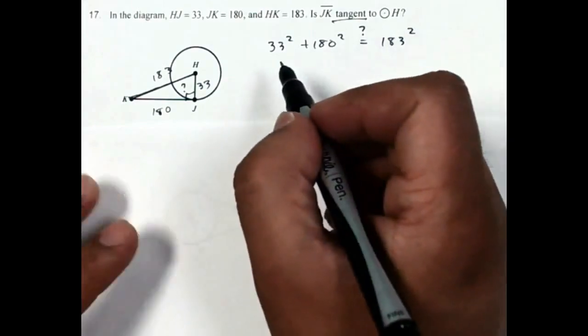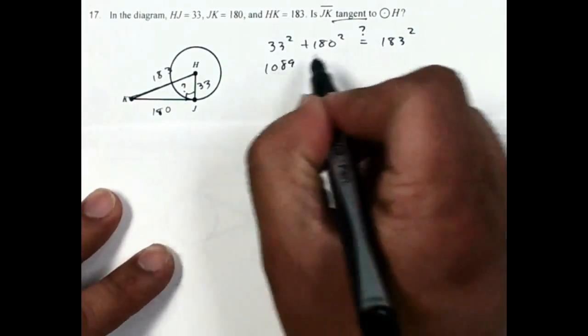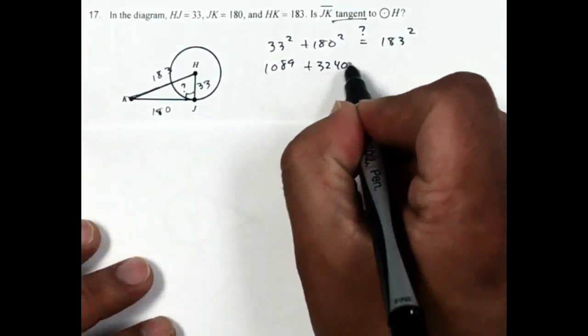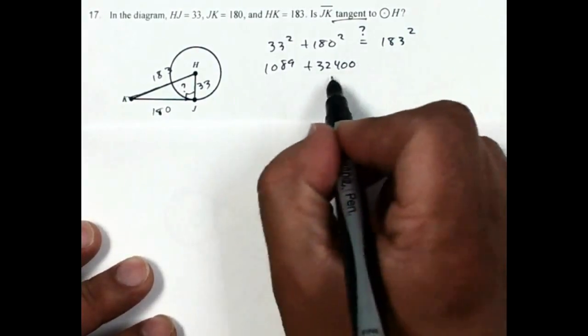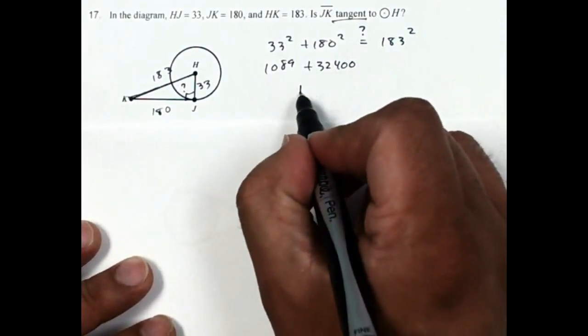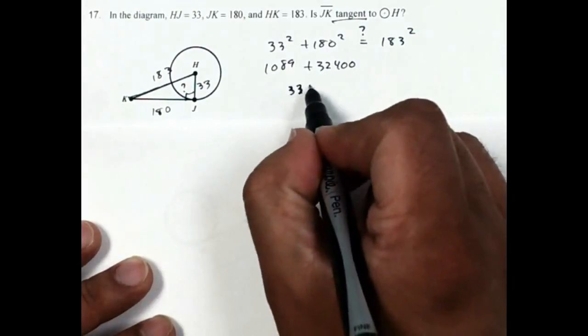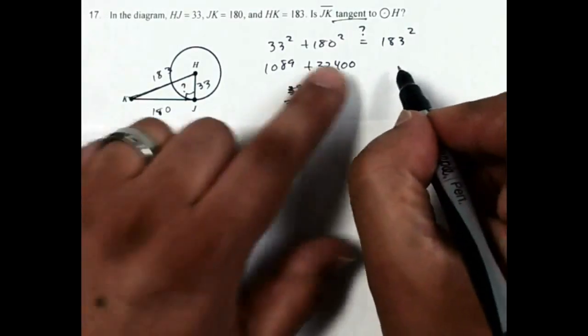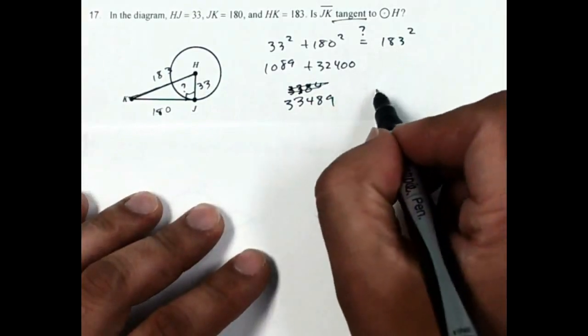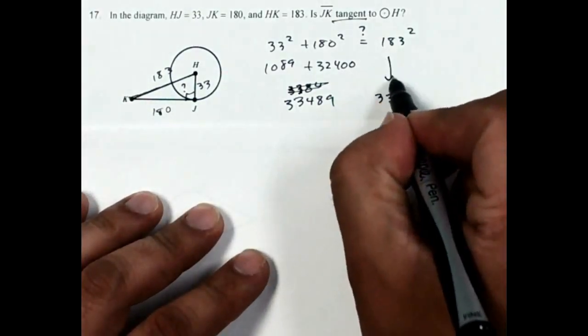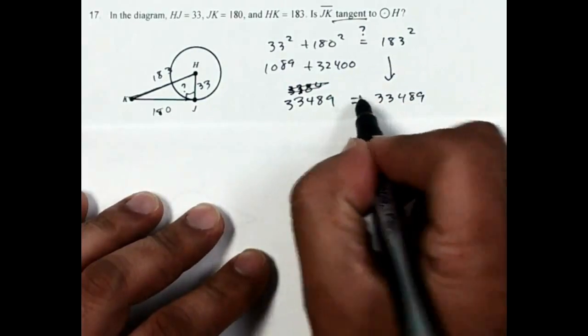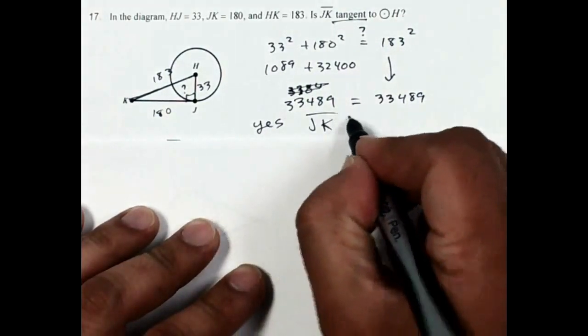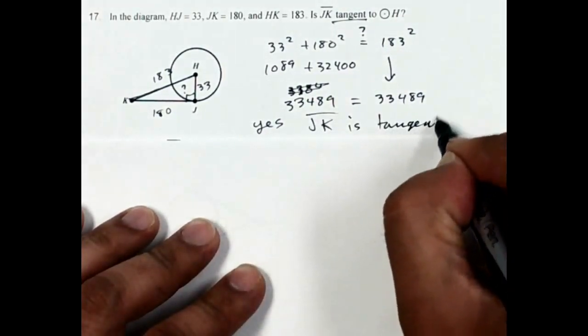33 squared is going to be 1089. 180 squared comes out to be 32,400. So if I square 183, I also get 33,489, so they are equal. And so my answer is yes, segment JK is tangent to circle H.